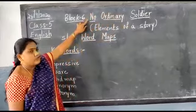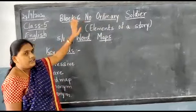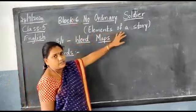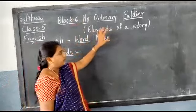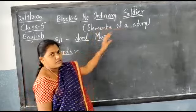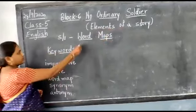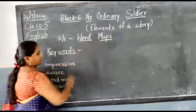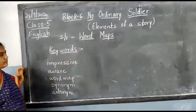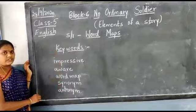You are going to read the story by yourself. Our main topic in this lesson — what I am going to teach in this block — is elements of a story. So today in elements of a story, our topic is word maps. Here I wrote a few keywords. Let me explain the keywords first.